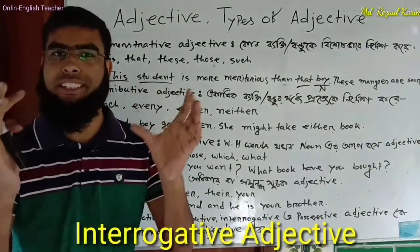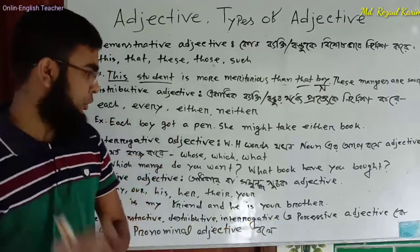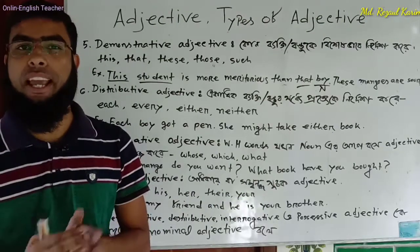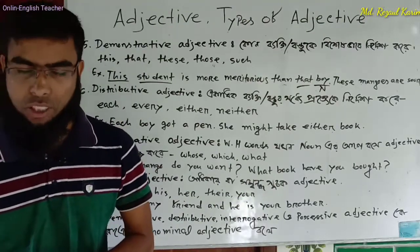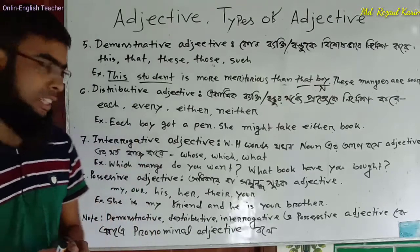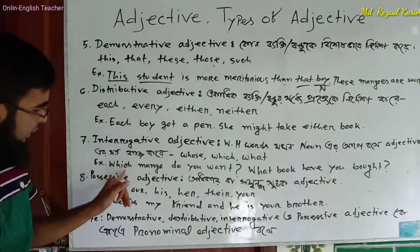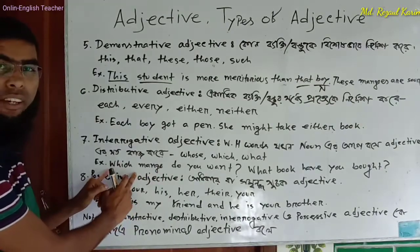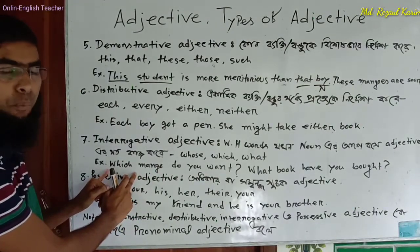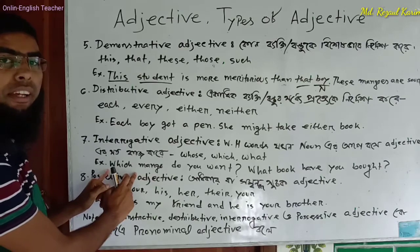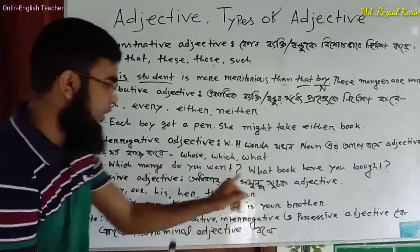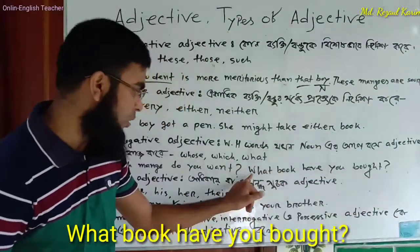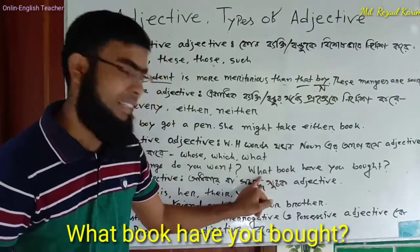Next is interrogative adjective — these are WH-words used as adjectives. For example: Which mango do you want? — 'which' is an interrogative adjective qualifying the noun 'mango.' What book have you bought? — 'what' is an interrogative adjective qualifying the noun 'book.'